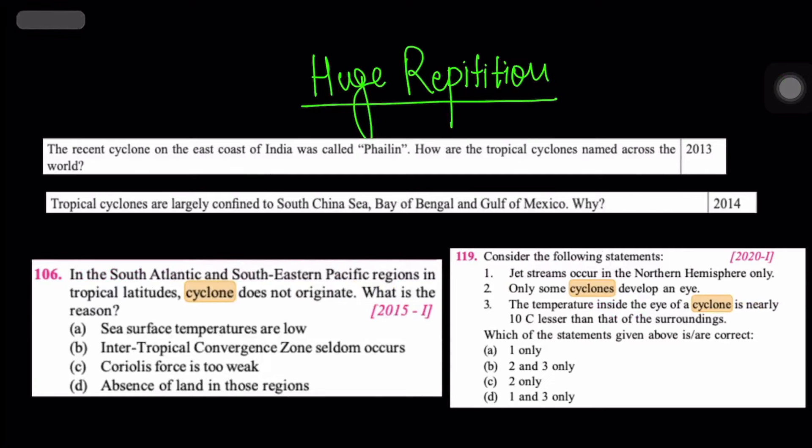Now let's talk about the repetition and previous year questions. In 2013 they asked naming of cyclones. In 2014 they asked why tropical cyclones are confined to South China Sea, Bay of Bengal and Gulf of Mexico. In 2015 they asked why there are no cyclones in South Atlantic and Southeast Pacific. And in 2020 they asked the difference between tropical and temperate cyclones.